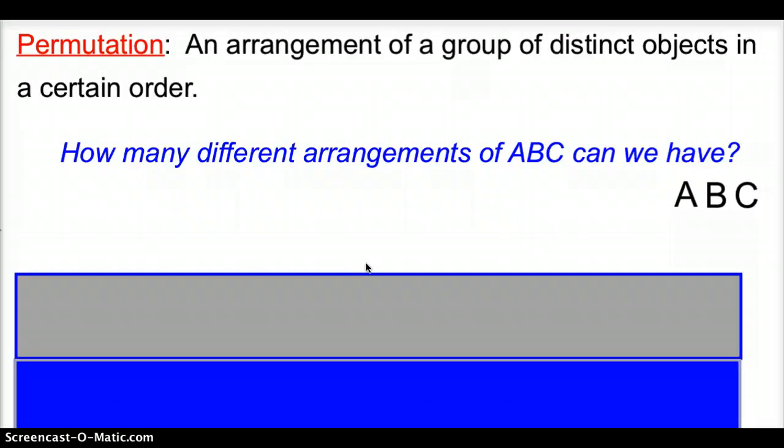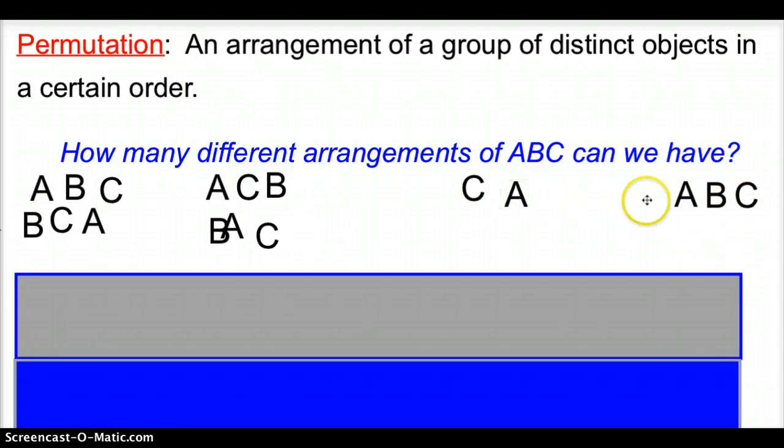Next, we're going to have another vocab word, a permutation. A permutation is an arrangement of a group of distinct objects in certain order. So, let's take a peek. How many different arrangements of ABC can we have? Well, if we arrange this, we have ABC. What other ways can we have? We can have BCA. We can have ACB. We can have BAC. And then finally, we can have CAB. And CBA.